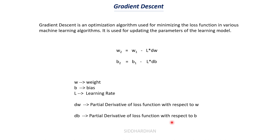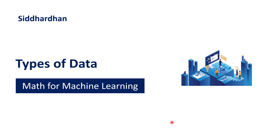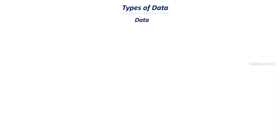Now let's move to the next topic: types of data. What are the different types of data in statistics and machine learning? The broad classification is categorical data and numerical data. Categorical data is represented in categories or classes — for example, data about the gender of a person tells you categories: whether the person is male or female.